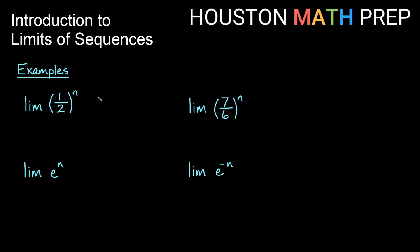Some more examples — we've got some exponentials. The limit of (1/2) to the n: if we repeatedly multiply by a number between negative 1 and 1, this is a geometric sequence with ratio 1/2, and that will converge to 0. So this limit is 0, and if this is the formula for a sequence, we say it converges to 0.